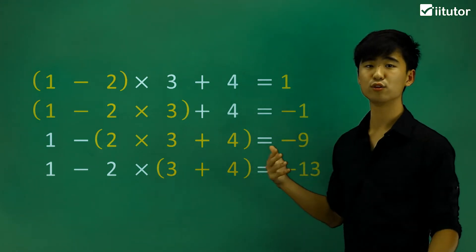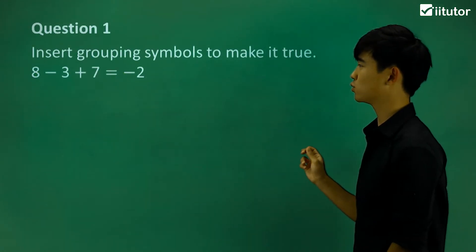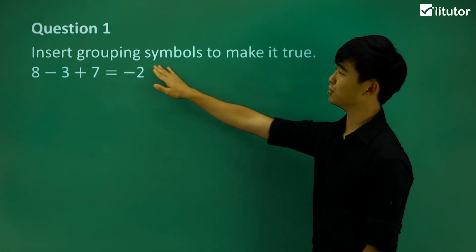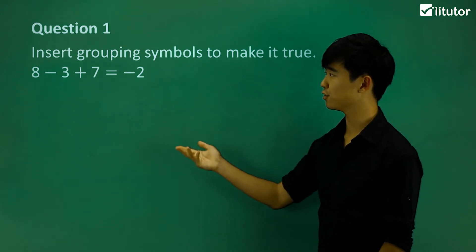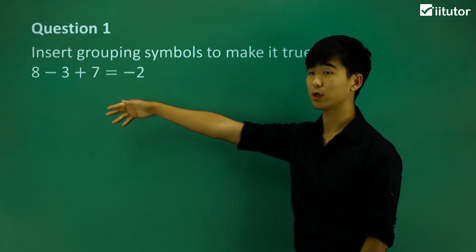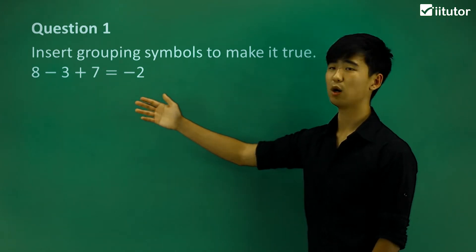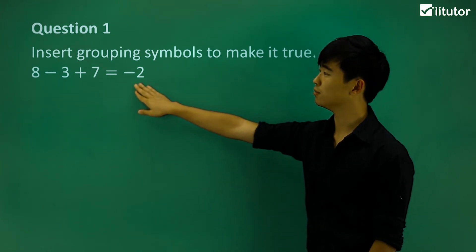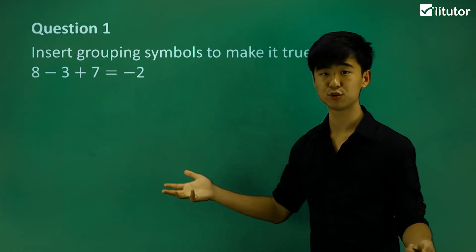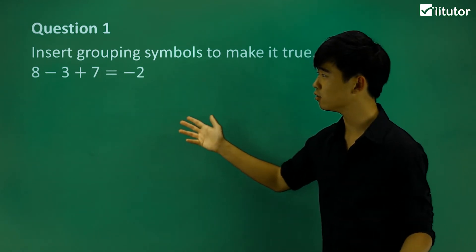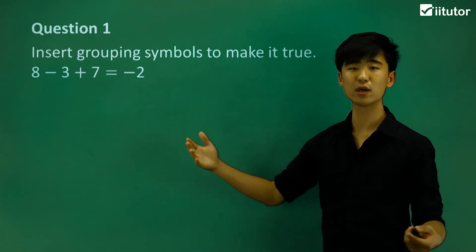Now let's try and take a look at some questions. This one is telling us to insert grouping symbols to make this true. So currently, if you have a quick look at it, 8 minus 3 plus 7, we know it's not minus 2. But we're going to insert grouping symbols somewhere for us to make it equal to minus 2. So where can we place it?